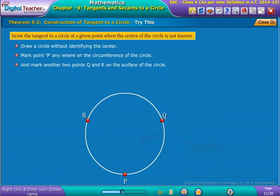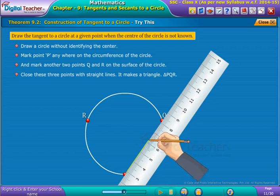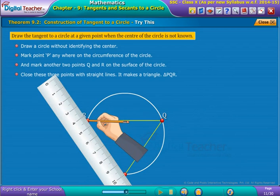Mark another two points Q and R on the surface of the circle. Close these three points with straight lines. It makes a triangle, triangle PQR.